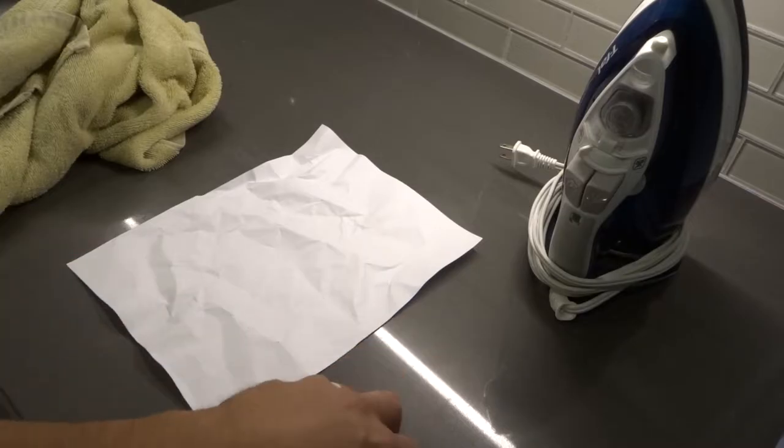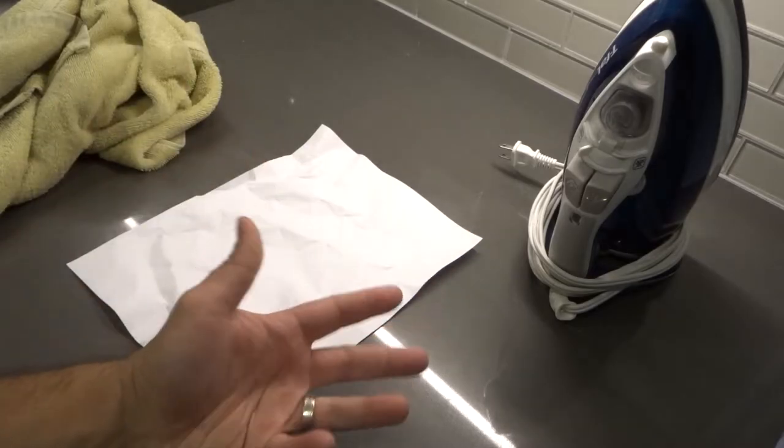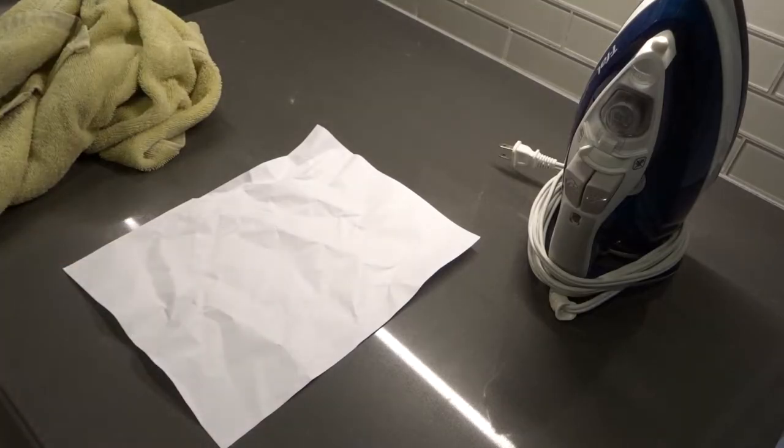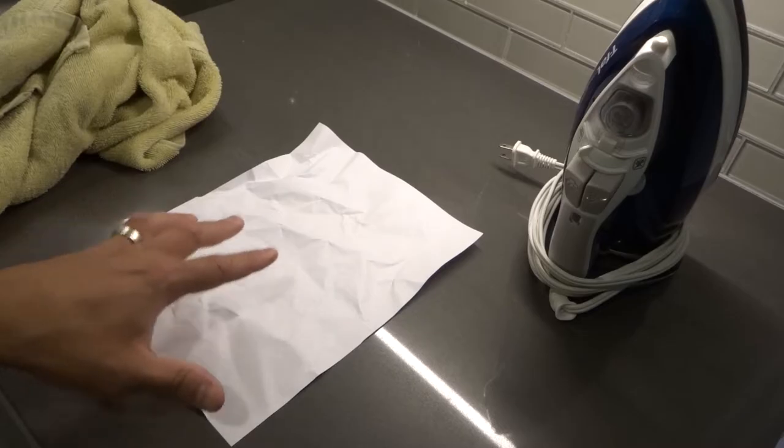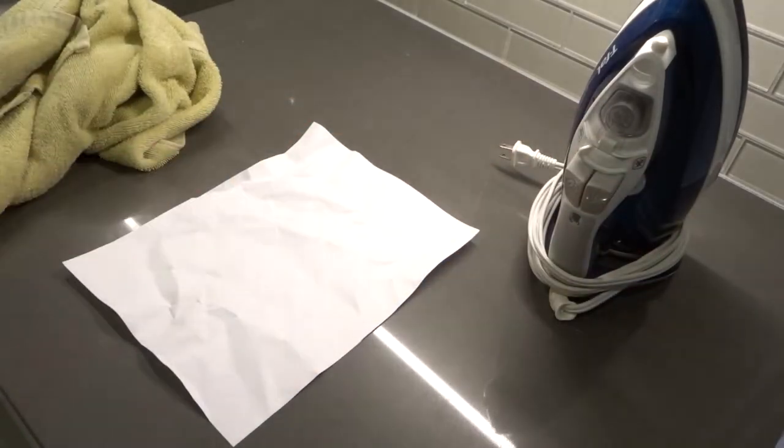I'm going to try and keep this short and sweet because it really only involves two simple steps, and you can repeat these steps over and over until you get the wrinkles out of the paper. But if you do them properly, you should be able to get most of the wrinkles out with just one process of both steps.